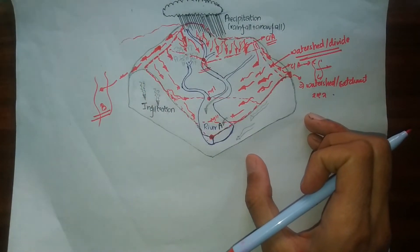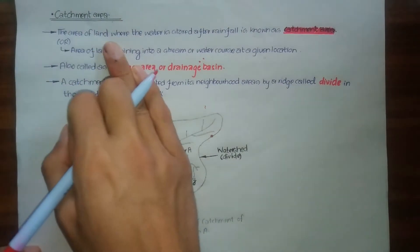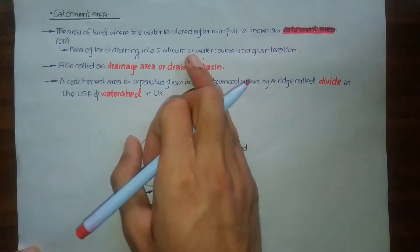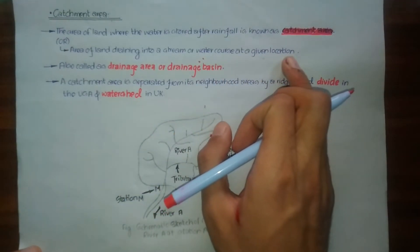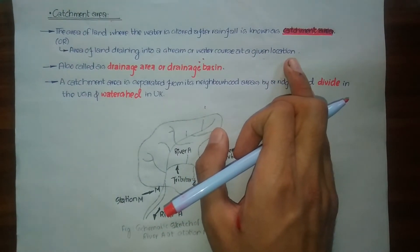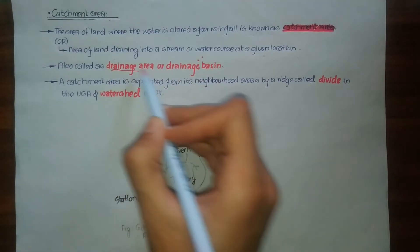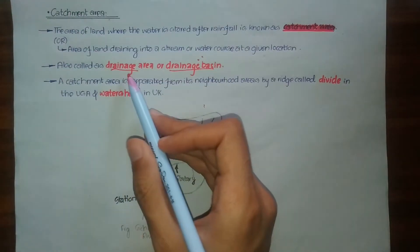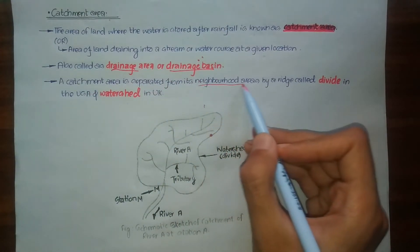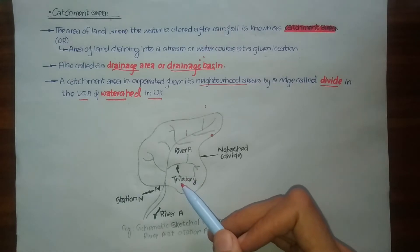The area of land where the water is stored after rainfall is known as catchment area, or: the area of land draining into a stream or water course at a given location. Catchment area is also called drainage area or drainage basin. Our catchment area is separated from its neighboring areas by a ridge called 'divide' in the USA and 'watershed' in the UK.